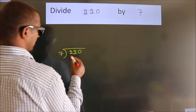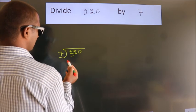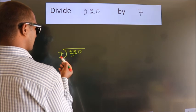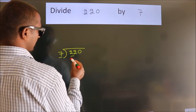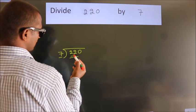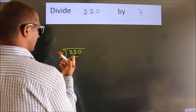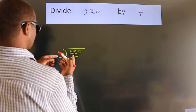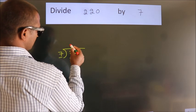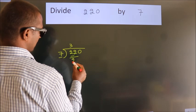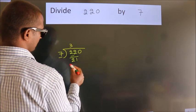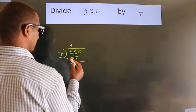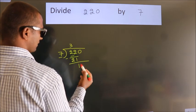Here we have 2, here 7. 2 is smaller than 7, so we should take 2 numbers: 22. A number close to 22 in the 7 times table is 7 threes, 21. Now we subtract and we get 1.